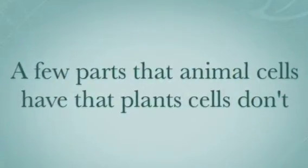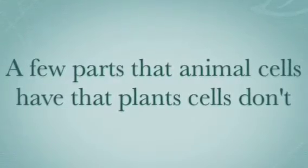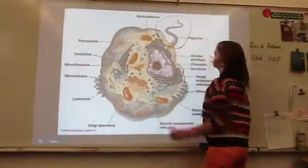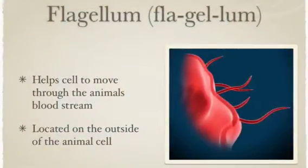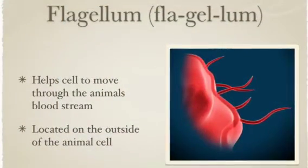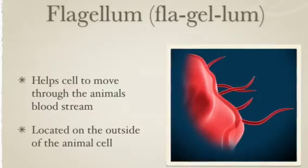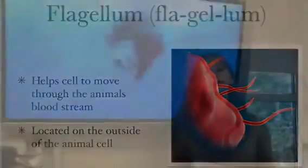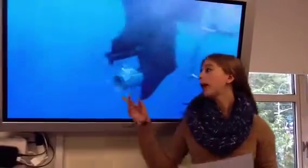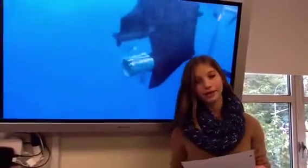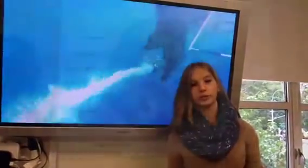A few parts that animal cells have that plant cells don't. This right here is the flagellum. The flagellum helps the cells move through the animal's bloodstream. It's located on the outside of the animal cell. There is nothing in the library that is like the flagellum, but the propeller on a motorboat acts like the flagellum because it helps the boat move on its own.